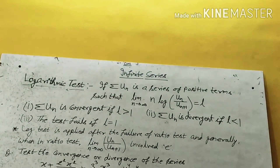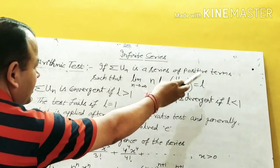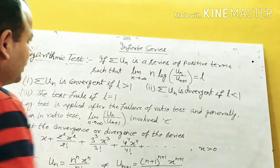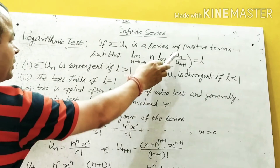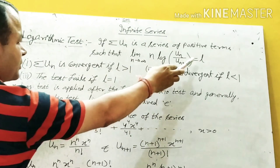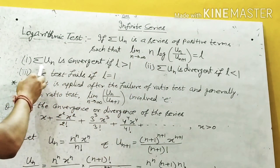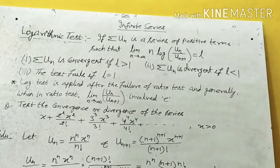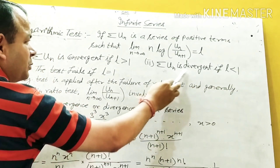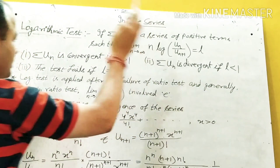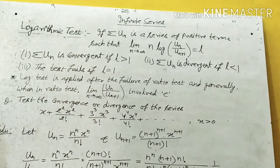In the logarithm test, if summation un is a series of positive terms such that limit n tends to infinity of n log(un / un+1) equals l: if l is greater than 1, summation un is convergent; if l is less than 1, summation un is divergent; and if l equals 1, the test fails.